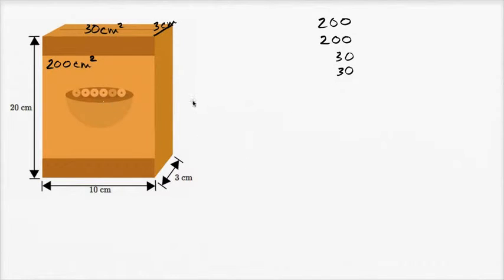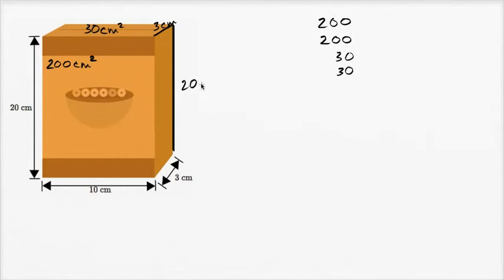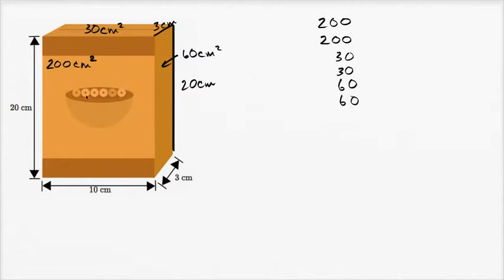We have two more sides, because this box has six sides. This side panel is 20 centimeters tall and 3 centimeters deep. Three centimeters times 20 centimeters gives us 60 square centimeters. There's another side panel with the exact same area on the other side of the box, so that's another 60 square centimeters.